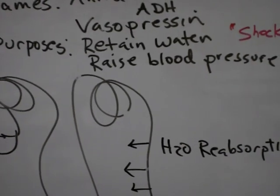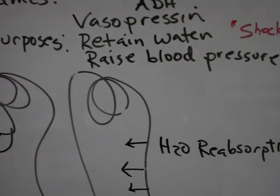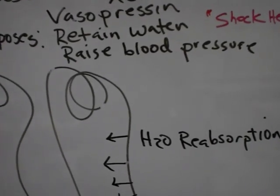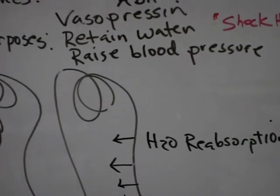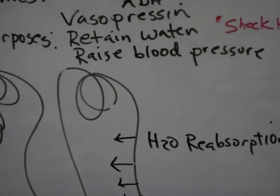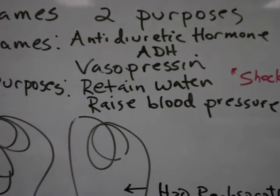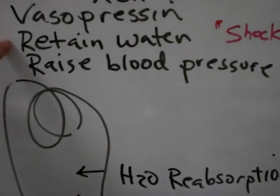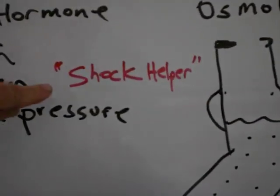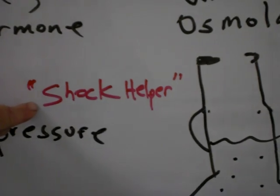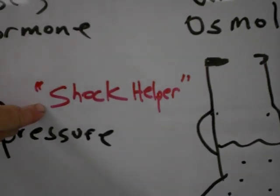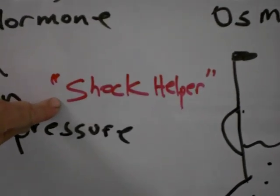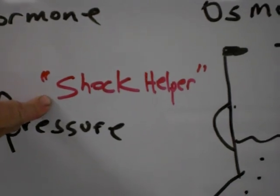With the name vasopressin — vaso means blood vessel, pressin means constrictor — so vasopressin means raise the blood pressure. Now if you think about that: retaining water and raising blood pressure, do you think this would be a great hormone if a patient was in shock? Yes, and it is a great hormone when you're in shock.